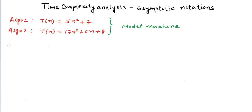A couple of things about time complexity analysis: when we analyze time complexity, we analyze it for really large input sizes. So we want to analyze the time taken when n tends to infinity. In that case, the constant terms +7 and +6n+8 become insignificant compared to the n² term.